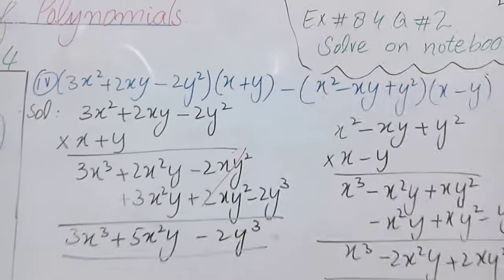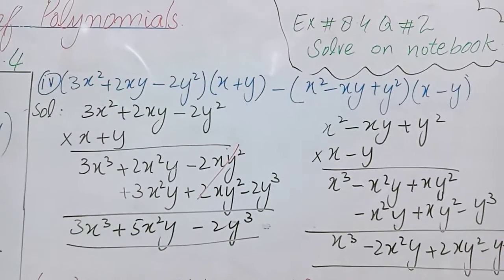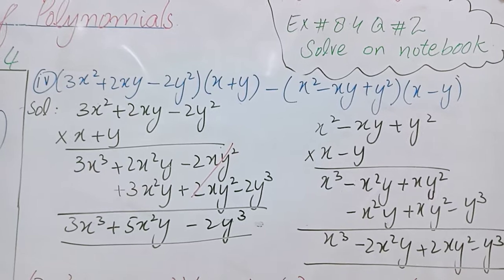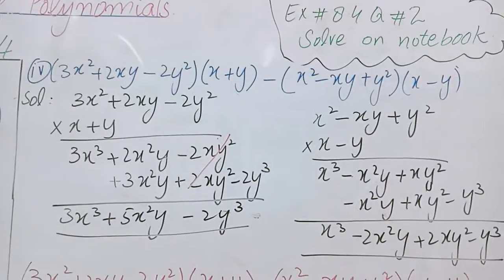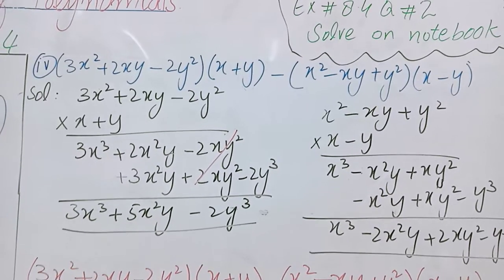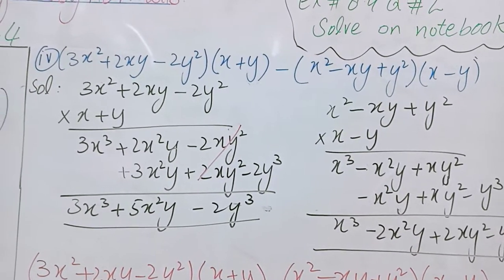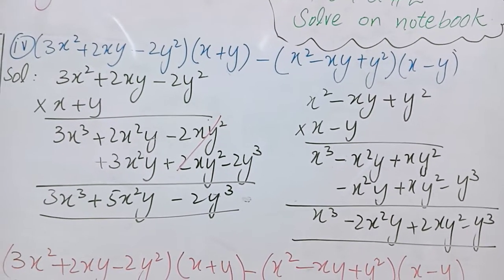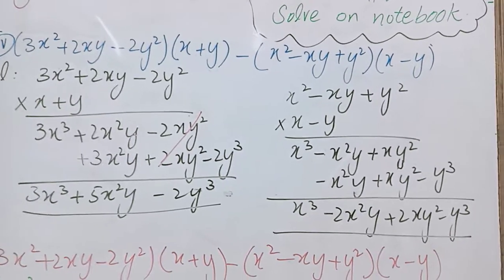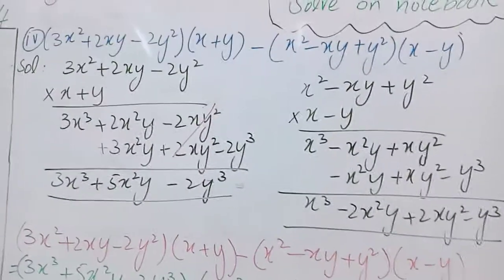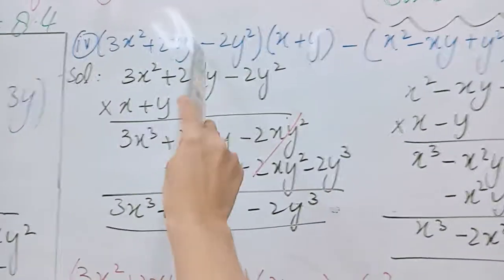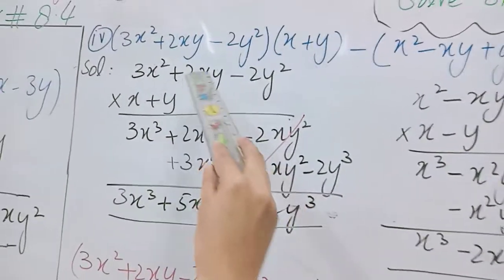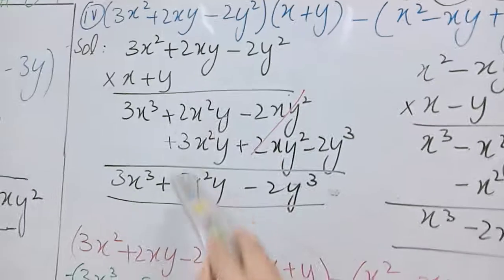Now come to the part number 4. In part number 4 we have (3x² + 2xy - 2y²)(x + y), first is trinomial and second binomial, this one part complete. Then minus sign (x² - xy + y²), this is trinomial and (x - y) is the binomial. Now two parts, this is the first part and this is second part.